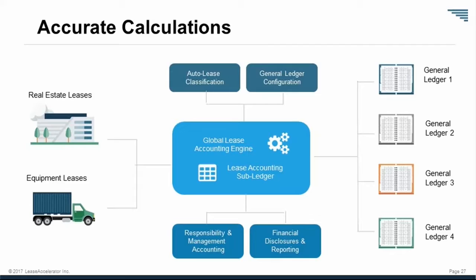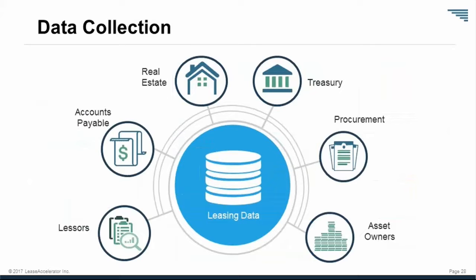Then you really shift your burden from implementation planning to data collection, which is where it should be. Most companies just don't have good control over their non-real estate data portfolio. That's really where the bulk of the work is — you have to find the contracts, especially for equipment leases and embedded leases. There are typically 5 to 12 documents involved that you have to pull data from to fully populate the system, plus ancillary data like chart of accounts, GL string definitions, and corporate hierarchy to configure the software.